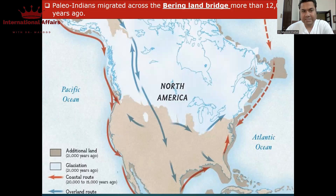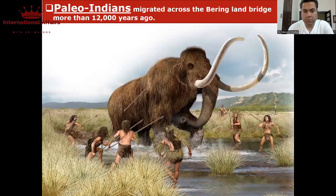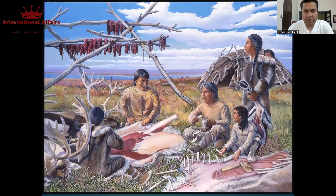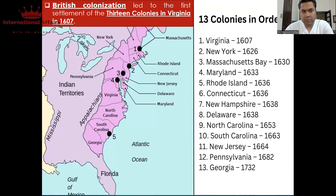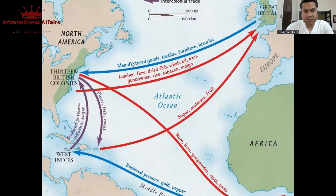Historically, if we look at these people — we call them Paleo-Indians — who migrated to this region 12,000 years ago. They had a nomadic life and were there in this region 12,000 years ago. Then they had 13 colonies in this region. With their 13 colonies they used to control this area, and here they had all materials — gunpowder, rice, iron, oil. Great Britain took manufactured goods, textiles, furniture, and luxury items from this region.